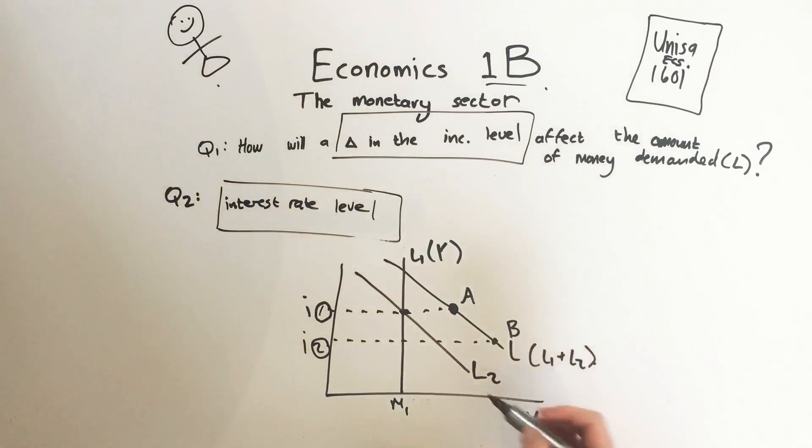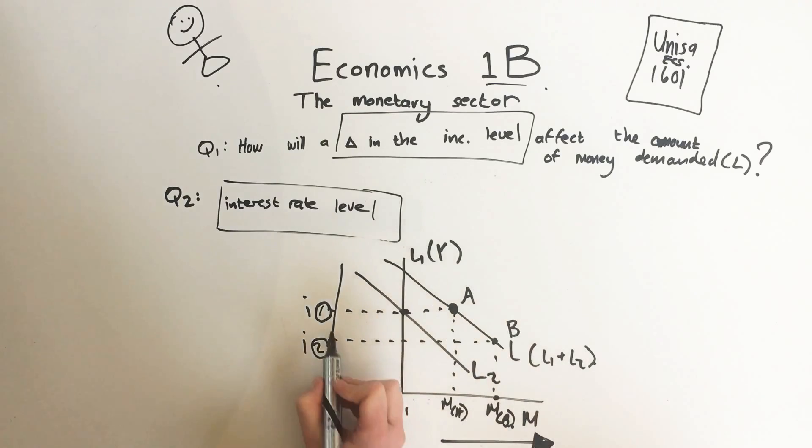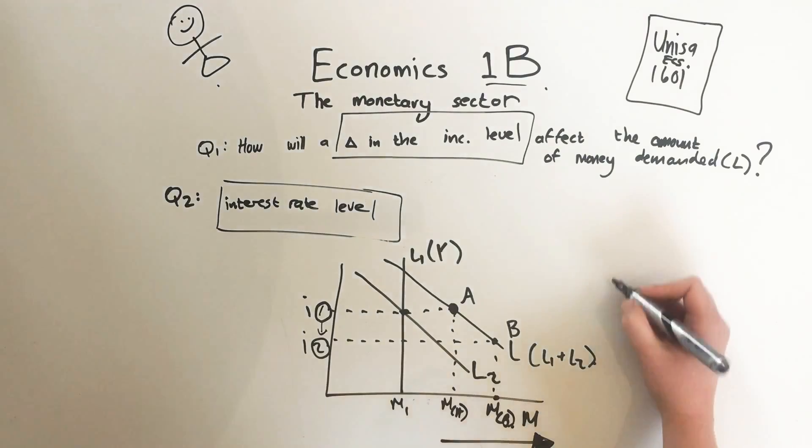Now if the interest rate goes down, we have point B, and then this goes down all the way here. Which means we had our money at interest rate A, and then that changes here to interest rate B. As you can see, the demand for money increased. So what happens when the interest rate goes down? The total demand for money increases. There's a very nice description on page 20 of the tutorial letter. Go and read it - it's fantastic. Good luck, cheers!